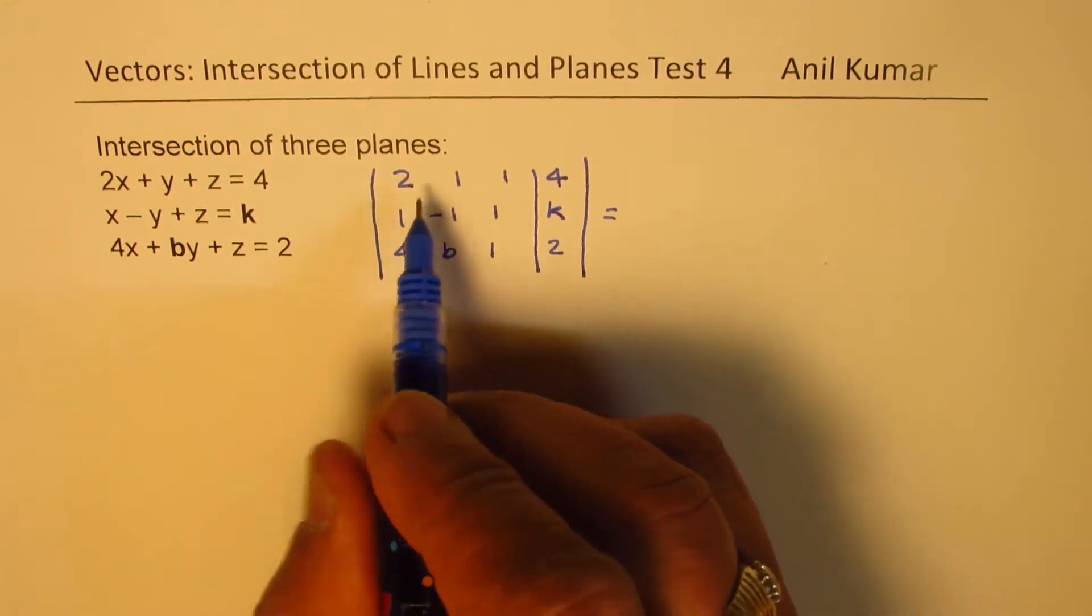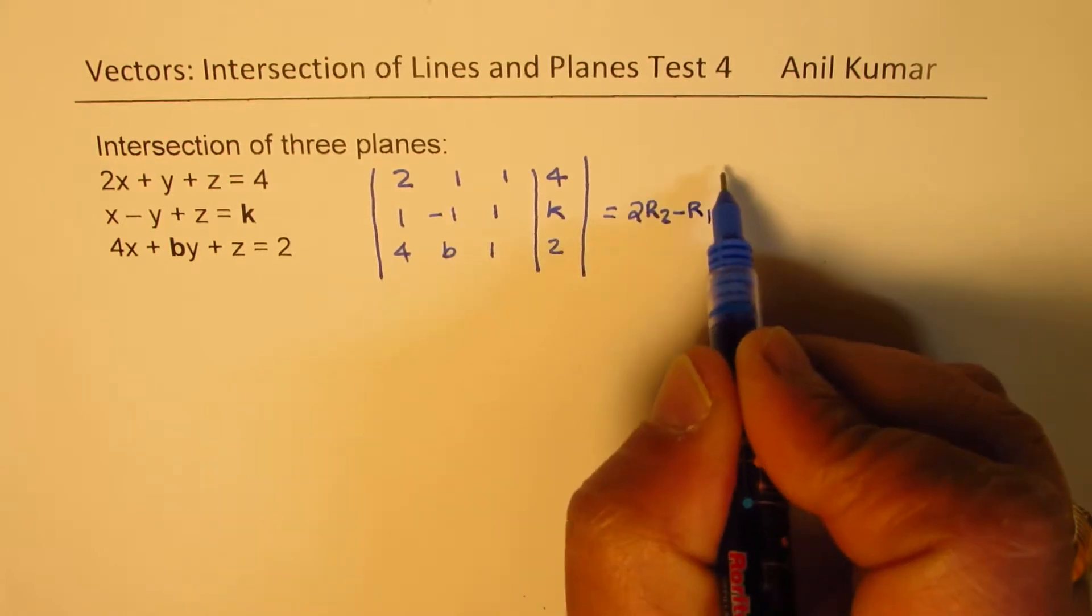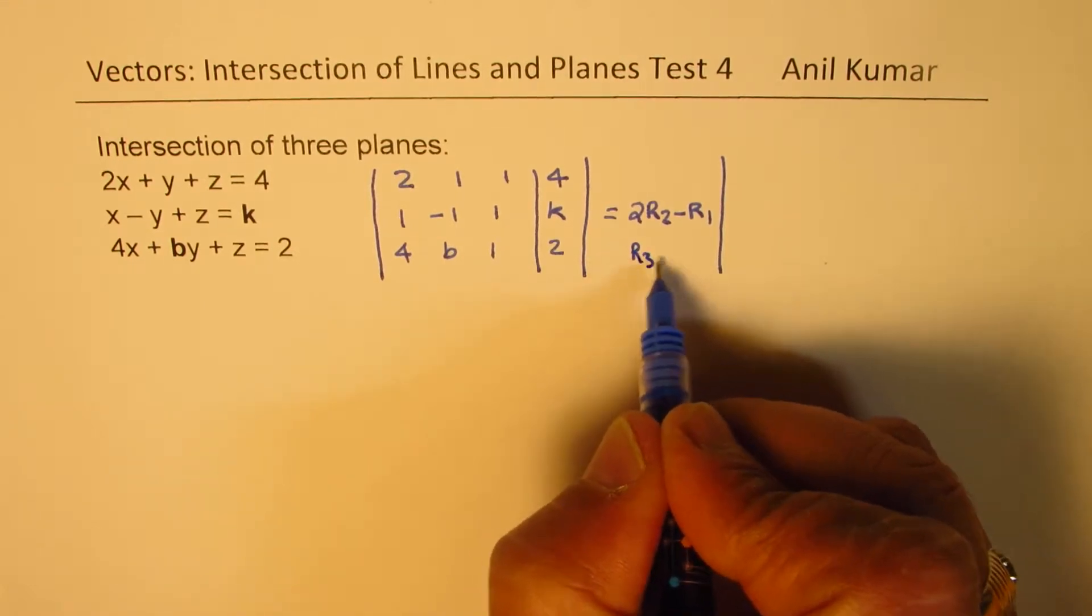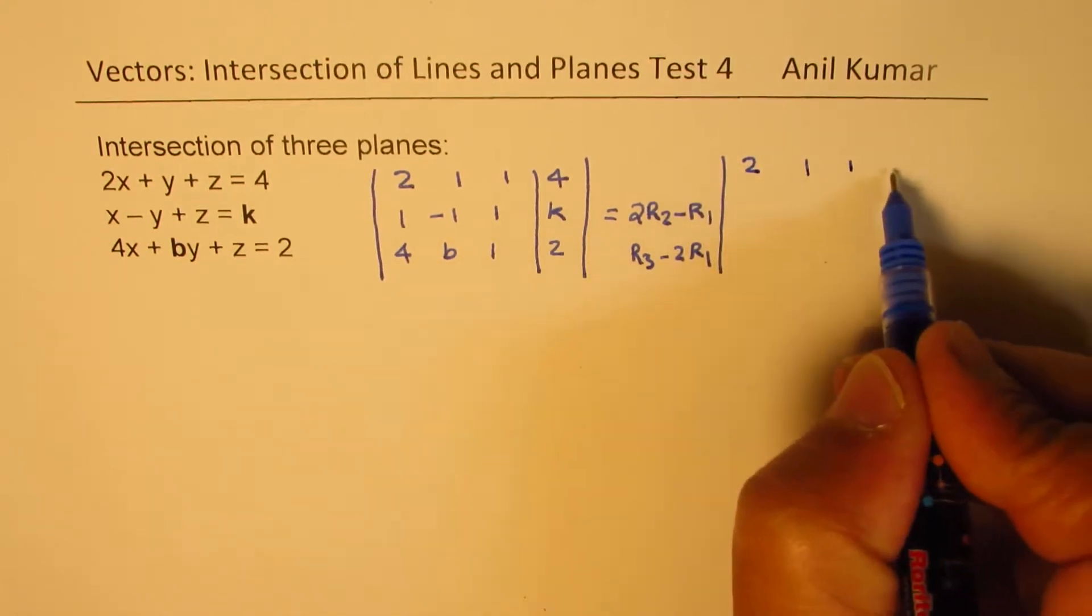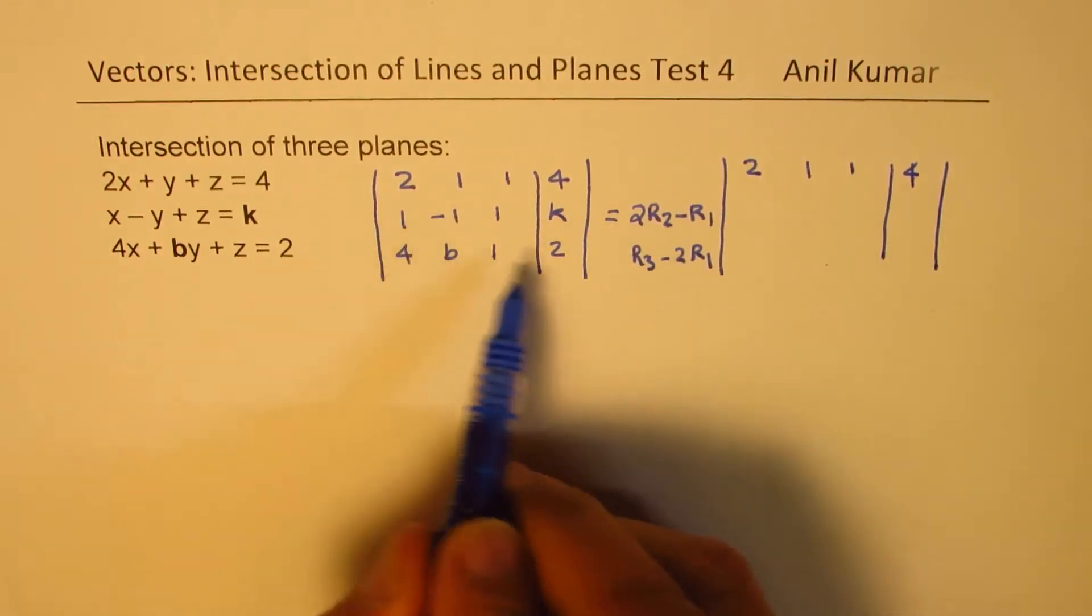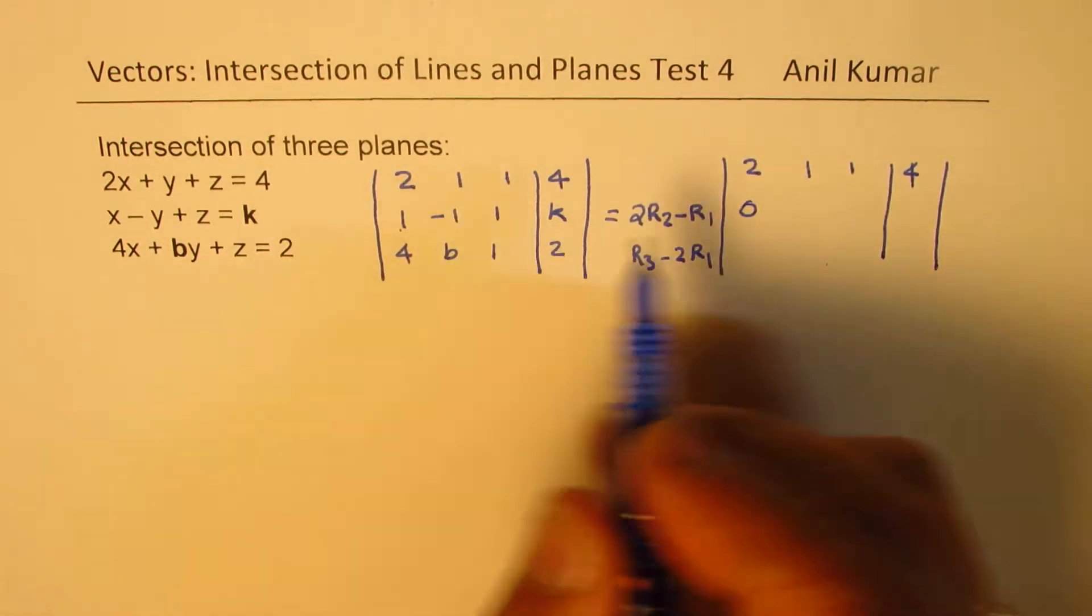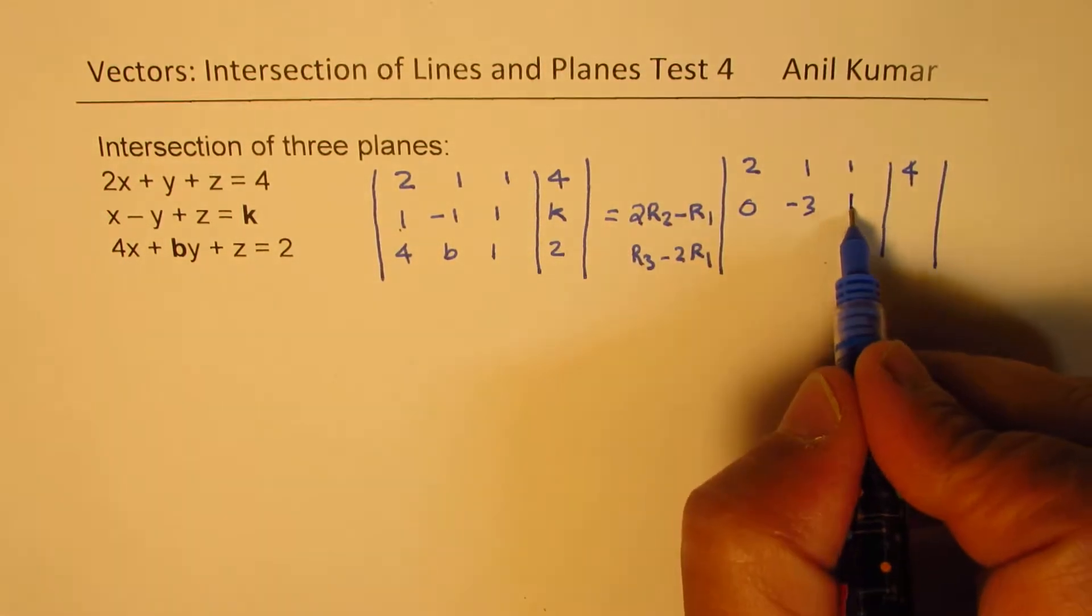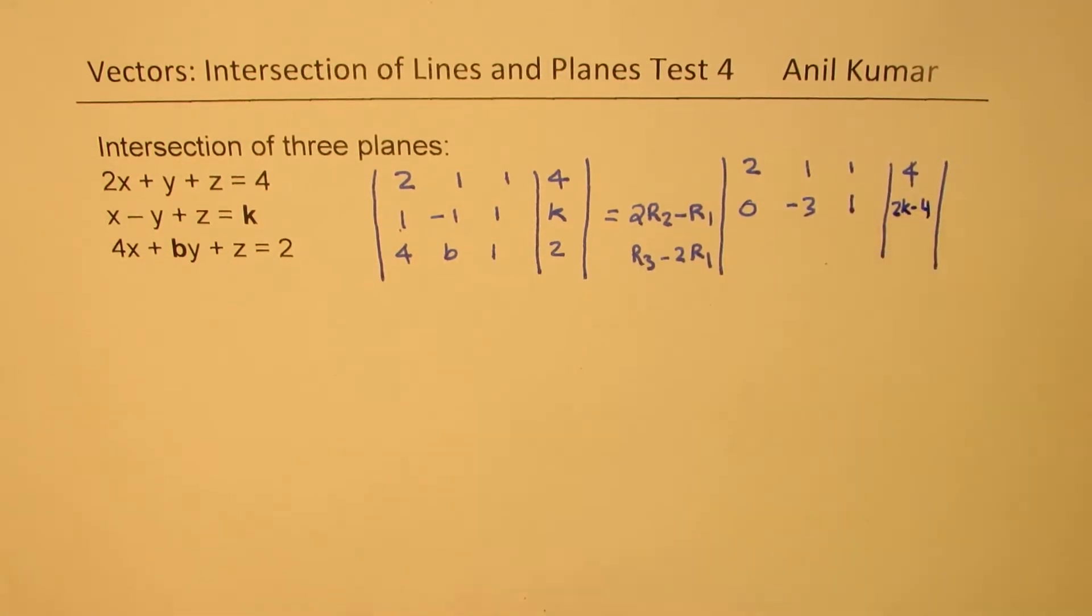So the idea is to get 0 in these two places. To get 0 here, I will do 2 times r2, take away r1. So then I can get 0 this place. And here I will do r3, take away 2 times r1. So r1 will keep as 2, 1, 1, 4. Now, 2 times r2, take away this. This is 0. Minus 2, take away this will be minus 3. And 2 take away this will be 1. And 2k, take away this will be 2k minus 4.